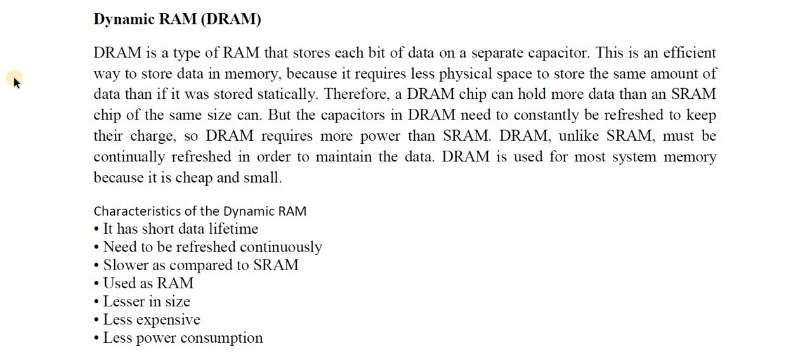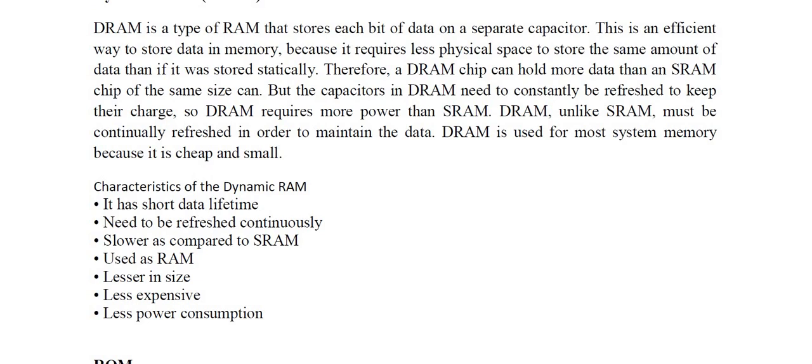Characteristics of SRAM: it has a long life, no need to refresh, it is faster, it can be used as cache memory, but it is large in size, expensive, and consumes a high amount of power. DRAM (Dynamic RAM) stores each bit of data on a separate capacitor. This is an efficient way to store data because it requires less physical space, so a DRAM chip can hold more data than an SRAM chip. However, the capacitors in DRAM need to be constantly refreshed, so DRAM requires more power than SRAM.